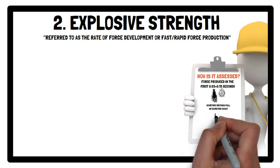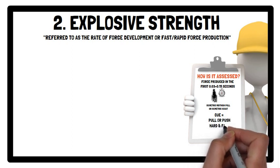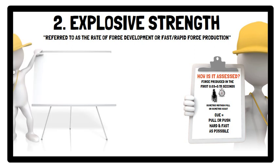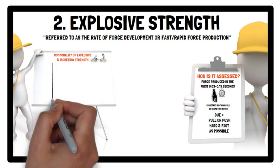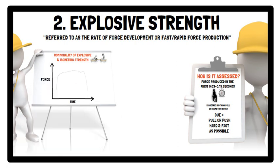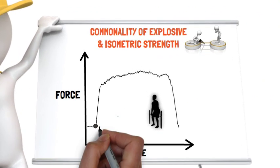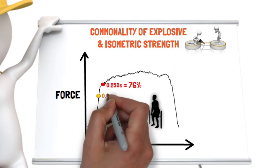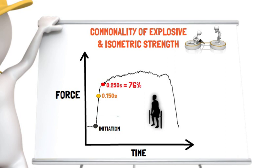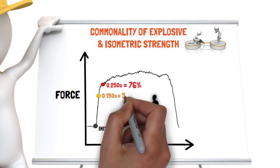When testing explosive strength, the cue is to pull or push as hard and as fast as possible. To properly assess explosive strength, the time frame must be brief enough to sufficiently distinguish it from maximal isometric strength. At 0.250 seconds, the commonality between explosive strength and maximal isometric strength is 76%, indicating they are testing a similar muscular performance quality. Whereas at 0.150 seconds, explosive strength appears to become isolated from maximal isometric strength, as indicated by a commonality of approximately 50%.